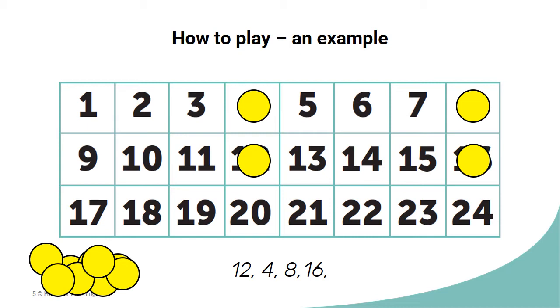There are no multiples of 16 on the board, so it will need to be a factor. We have already used some factors of 16, so let's choose the number 2. And so far we have a sequence of 5 numbers.